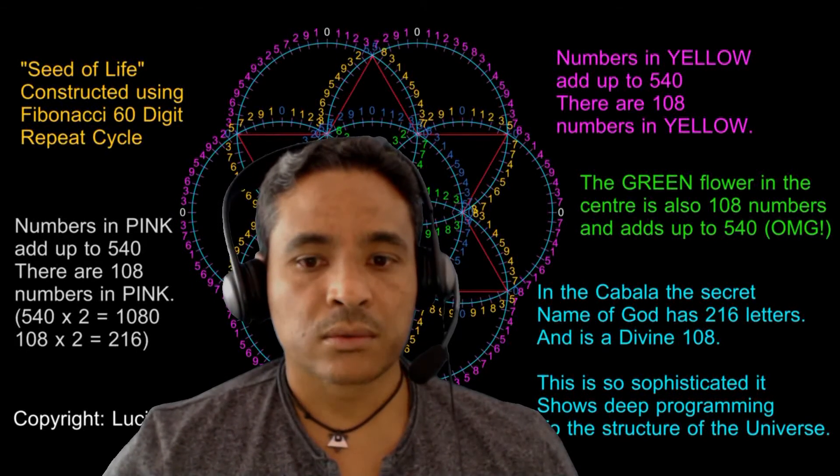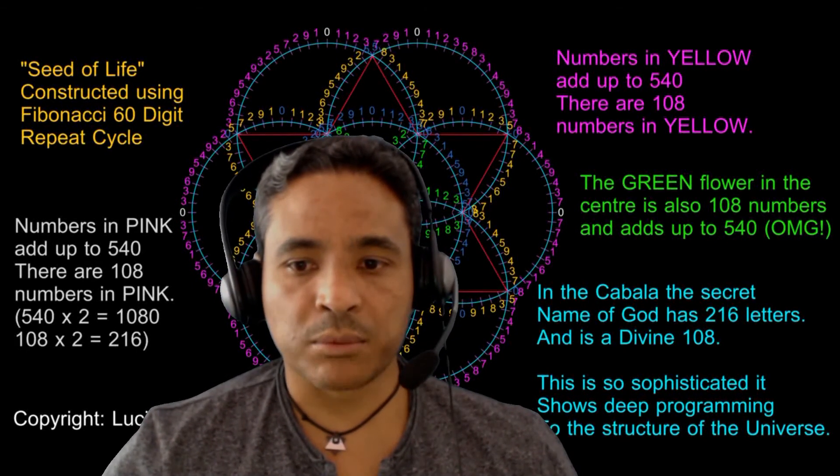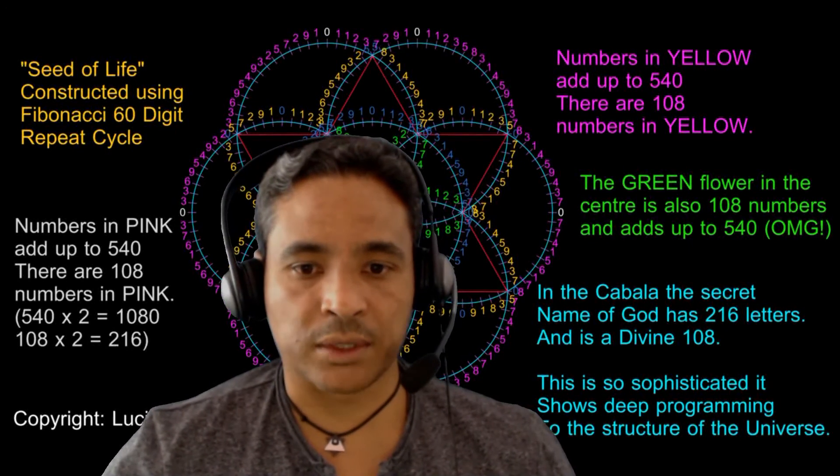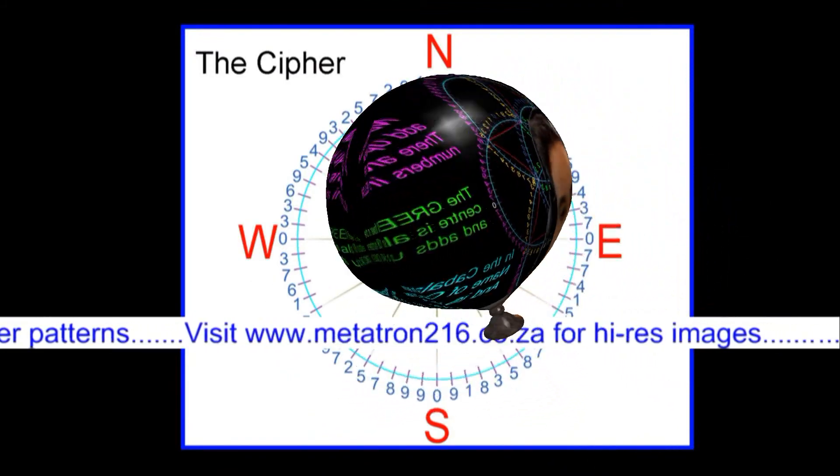In the next video, we will see how this Fibonacci building block starts to generate a matrix of 216 numbers. Thank you for watching.